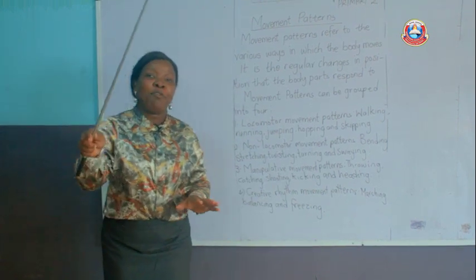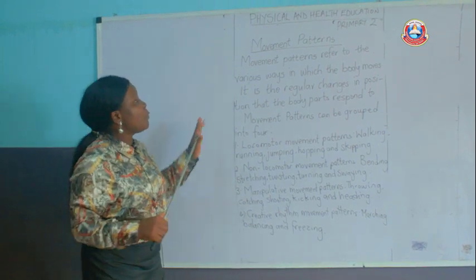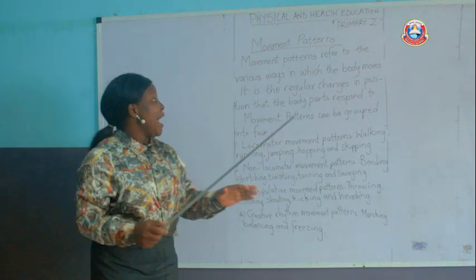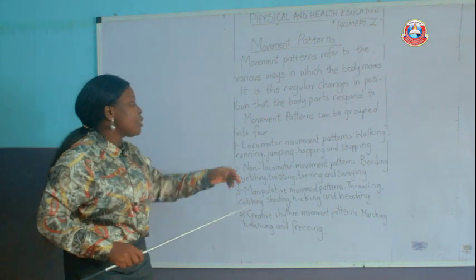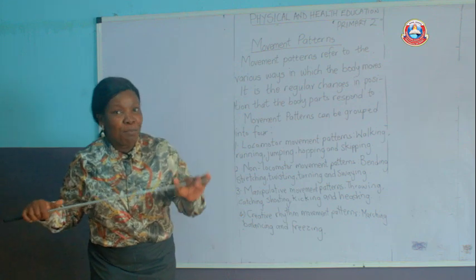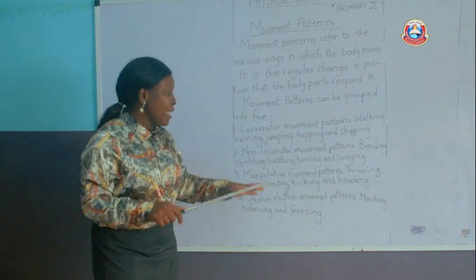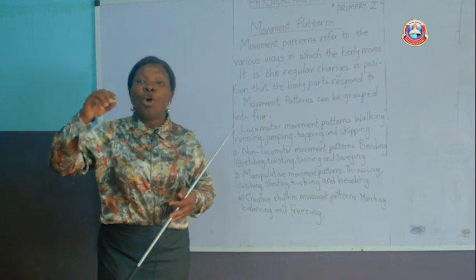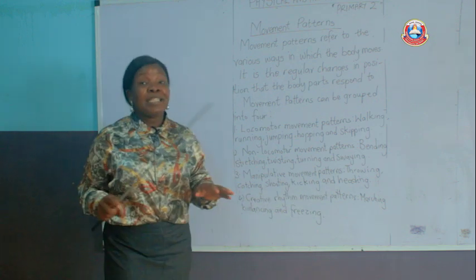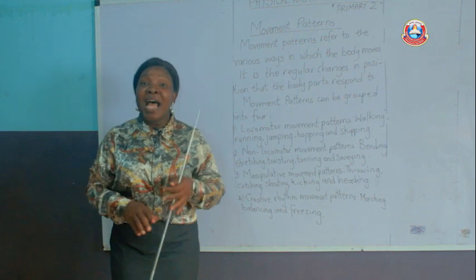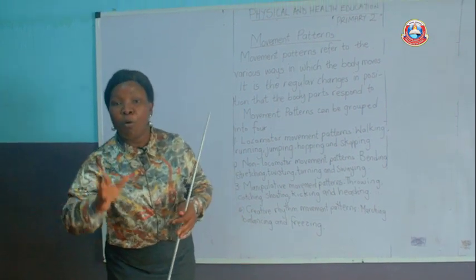This brings us to the end of our class today. Let's quickly do a recap. We learned that movement patterns refers to the various ways in which the body moves, and these patterns can be grouped into four: locomotive movement pattern, non-locomotive movement pattern (done at a spot using parts of the body), manipulative movement pattern (using your hands, head, or feet), and creative rhythm movement patterns (associated with sound with a pattern that must be followed).